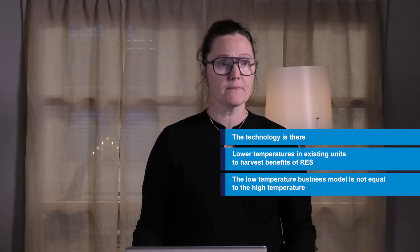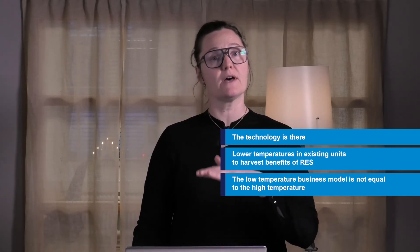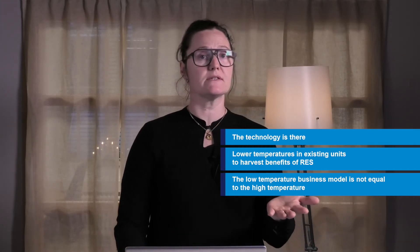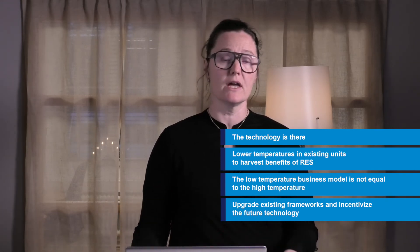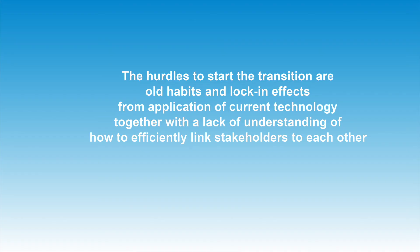In conclusion, the main takeaways from the book are: technology is already available; you should combine lower temperatures with renewables for the highest cost efficiency; the low temperature business model is not identical to the high temperature one, so you should never simply apply the high temperature business case to a low temperature implementation; and we need upgrades of the policy framework to really kick this off. The largest conclusion from the handbook is that it's not about technological innovation anymore — we have the technology we need. Rather, it's about stakeholders who have identified the potential to use waste heat sources in urban areas coming together and working in new ways, so we don't have lock-in effects or hurdle effects remaining.